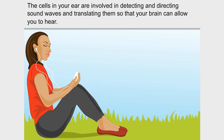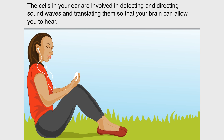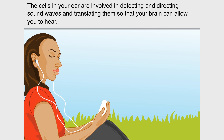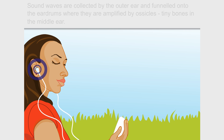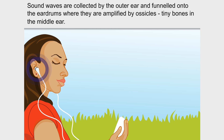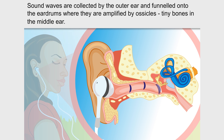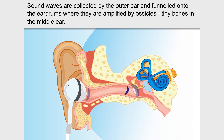The cells in your ear are involved in detecting and directing sound waves and translating them so that your brain can allow you to hear. Sound waves are collected by the outer ear and funnelled onto the eardrums where they are amplified by ossicles, tiny bones in the middle ear.